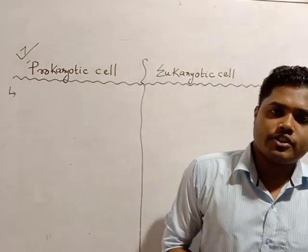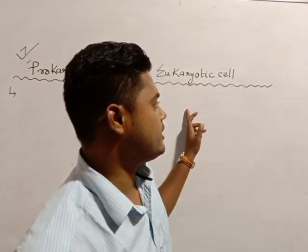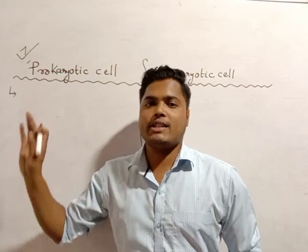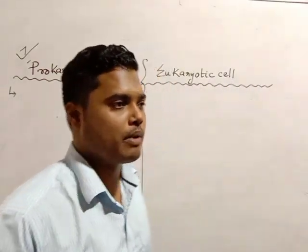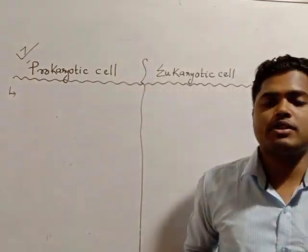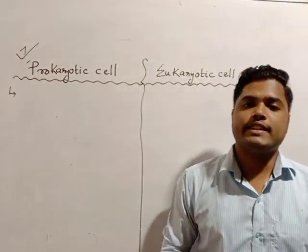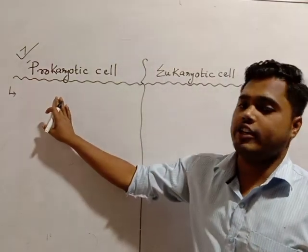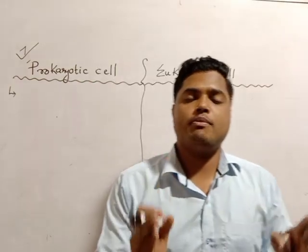Next, we discussed outer covering. This one has single membrane system outer covering, while this one has double membrane system outer covering. Next, plasma lemma - plasma membrane has respiratory enzymes in prokaryotic cells, but respiratory enzymes are not present in eukaryotic cells.